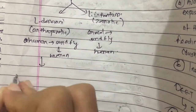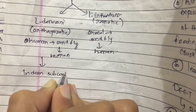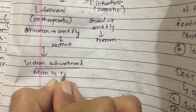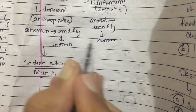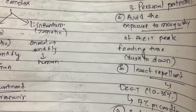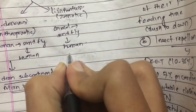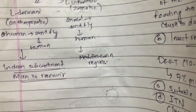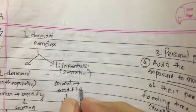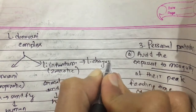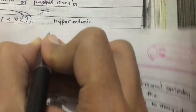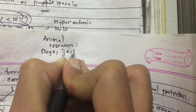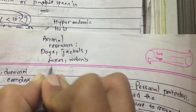The visceral leishmaniasis found in the Indian subcontinent is anthroponotic, meaning man is the reservoir — it is not a zoonotic infection. Leishmania infantum is mostly found in the Mediterranean regions of the world, and was later called Leishmania chagasi in the New World. Animal reservoirs include dogs, jackals, foxes, rodents, and other mammals.